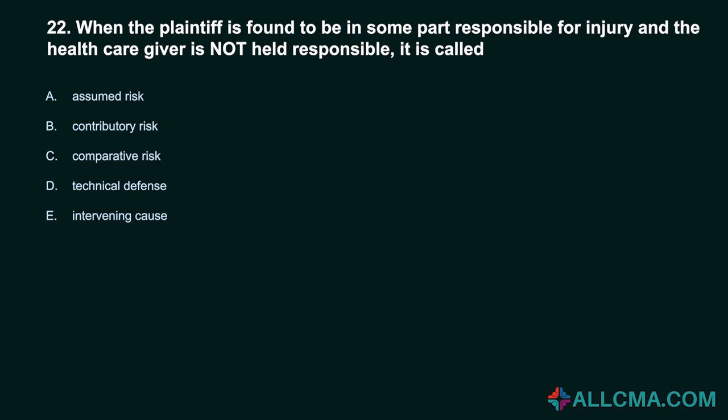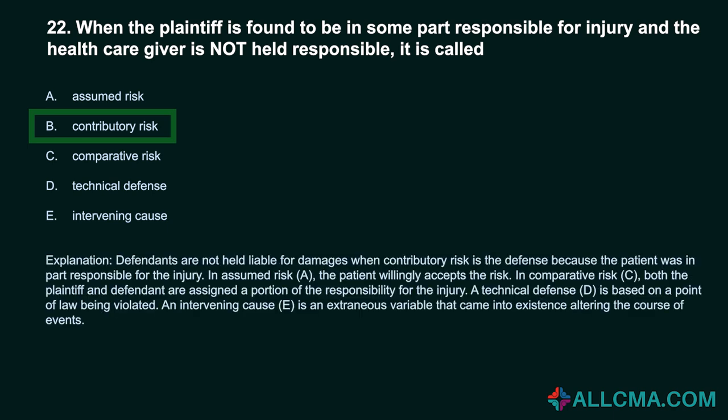Question 22: When the plaintiff is found to be in some part responsible for injury and the healthcare provider is not held responsible, it is called: a) assumed risk, b) contributory risk, c) comparative risk, d) technical defense, e) intervening cause. Correct answer: B, contributory risk. Defendants are not held liable when contributory risk is the defense because the patient was in part responsible for the injury. In assumed risk, the patient willingly accepts the risk. In comparative risk, both plaintiff and defendant are assigned a portion of responsibility. A technical defense is based on a point of law. An intervening cause is an extraneous variable that altered the course of events.